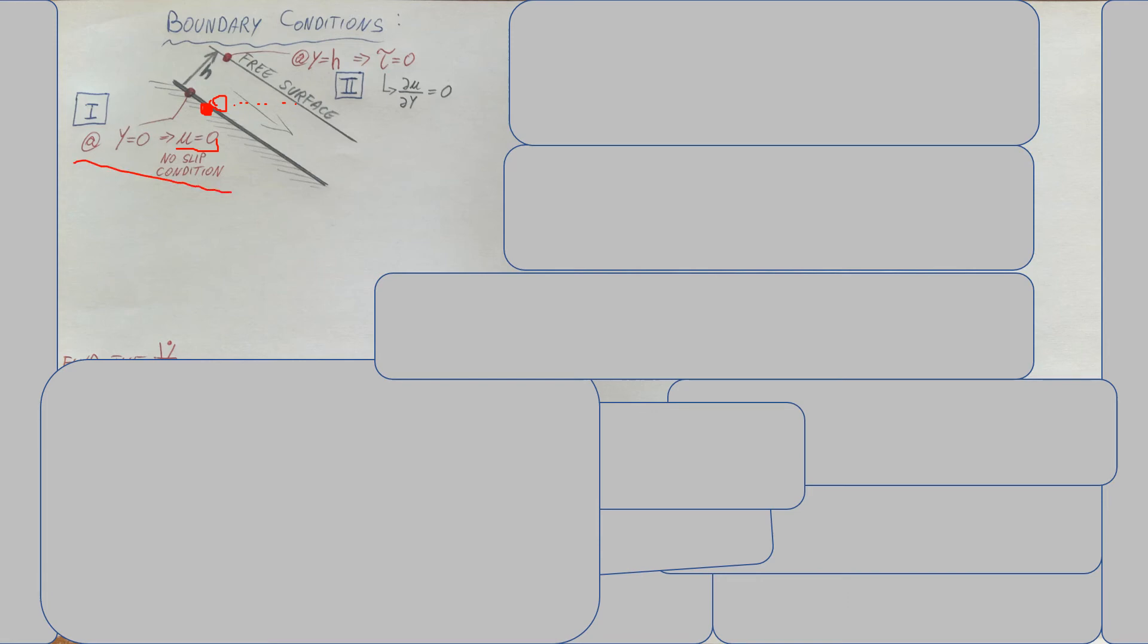That's our first boundary condition. And the second one that I'm going to use is at the free surface. Basically, the very last molecule on top of our fluid. Over here, no shear stress. And from that, we can deduct that the change, there's no change in u with respect to y. So, these are my two boundary conditions that's going to help find the c's.